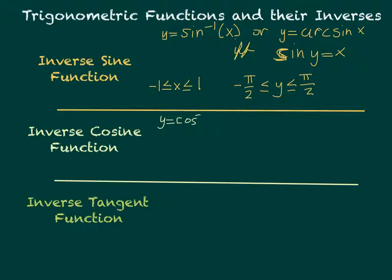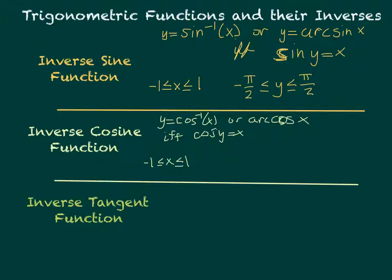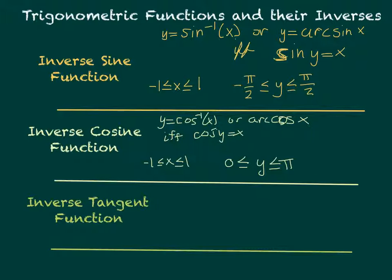The inverse cosine function is very similar — written as y equals cosine inverse of x, or arc cosine of x — and that is true if and only if cosine of y equals x. The original cosine oscillates from negative 1 to positive 1, so the domain of the inverse is negative 1 to 1. The range is shifted: 0 ≤ y ≤ pi, which is the interval without repeating y-values.